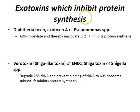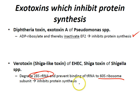Exotoxins which inhibit protein synthesis: diphtheria toxin and exotoxin A of the Pseudomonas species ADP ribosylate and inactivate elongation factor 2, inhibiting protein synthesis. You also have the verotoxin, which is a Shiga-like toxin of enterohemorrhagic E. coli (EHEC). The Shiga toxin of the Shigella species degrades the 28S rRNA and prevents the binding of the tRNA to the 60S ribosomal subunit, thereby inhibiting protein synthesis.